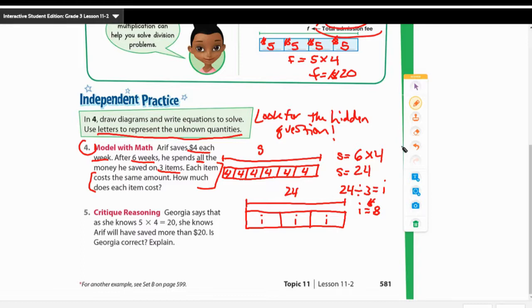Now in the last one here, number five, it says Georgia says that she knows five times four equals 20. She knows Arif will have saved more than $20. Is Georgia correct? Explain. And whenever they say explain, I would like to see a complete sentence there. And that means I want you to also restate and you will say, Georgia is correct because, and explain why. Georgia is correct because. Why is she correct? Now we know because we solved it that she was correct, but tell me why.